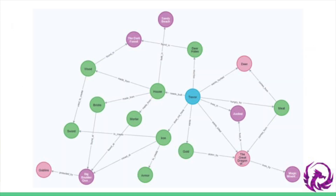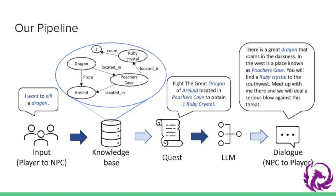An example of a knowledge graph can be seen here. Of the potential quests generated from the knowledge graph, the quest which is most in line with the player's desire is then chosen to move forward in the pipeline. This quest is deterministically generated to ensure that the quest assigned to the player is as accurate and achievable as possible.